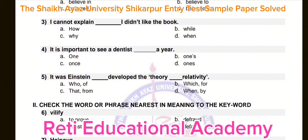Question number four: It is important to see a dentist dash a year. Options: A) one, B) once, C) once, D) once — there is a spelling difference among options B, C, and D. The correct answer is C) once. It is important to see a dentist once a year.